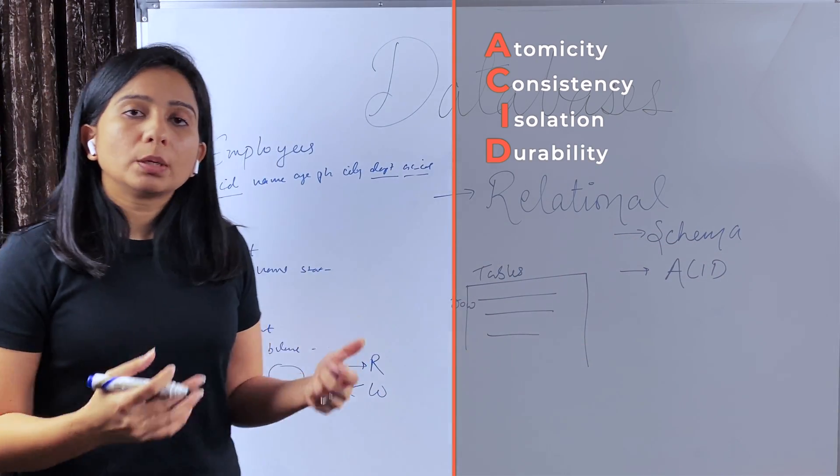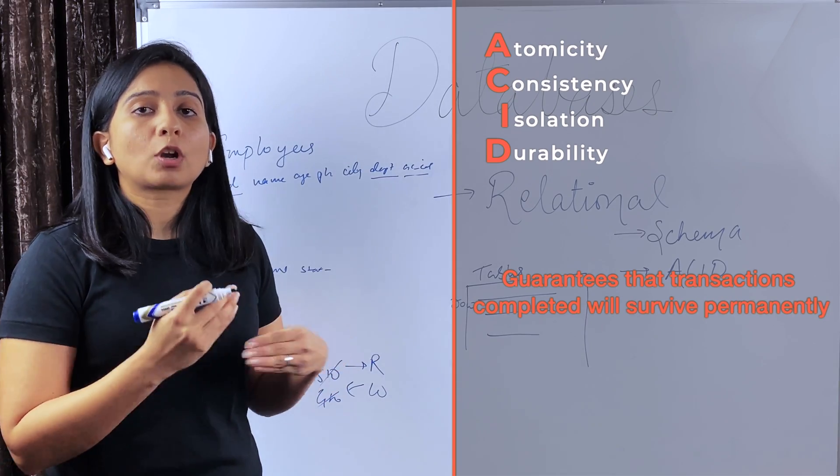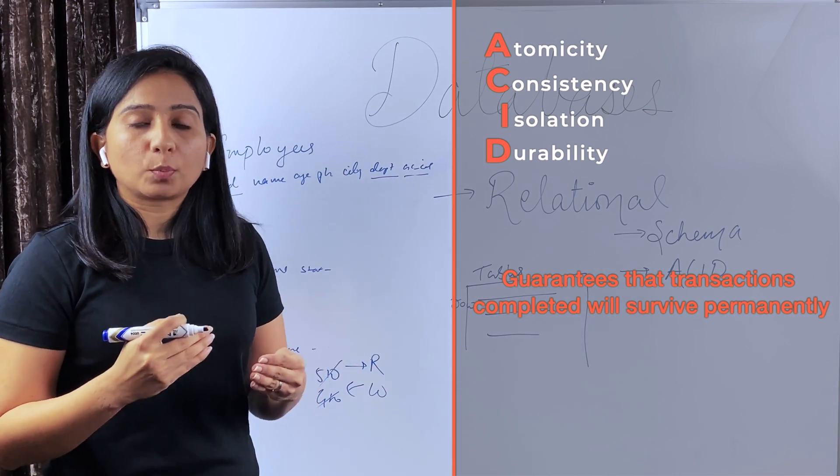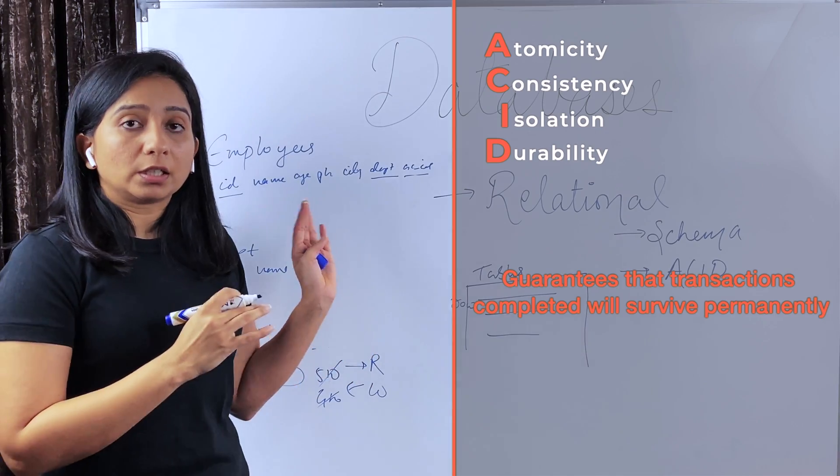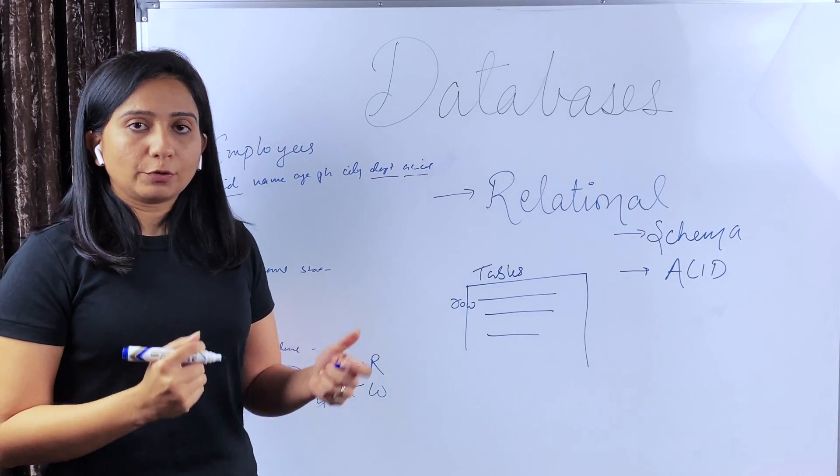Then durability. Durability is a mechanism that database ensures whatever writes or updates are happening, they are logged properly and all the details and the data is getting persisted into the disk storage. So that is just a brief of ACID properties.